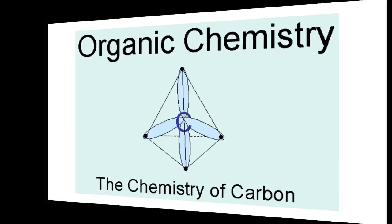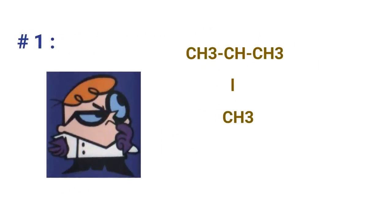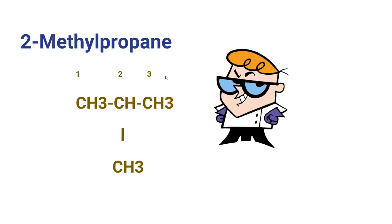Let's get started. Here is the first compound — name this compound. Locate the longest chain and see where the substituent is present. Pause the video and write down the name. The name of this compound is 2-methylpropane: the longest chain consists of 3 carbons, and a methyl group is located on the second carbon.